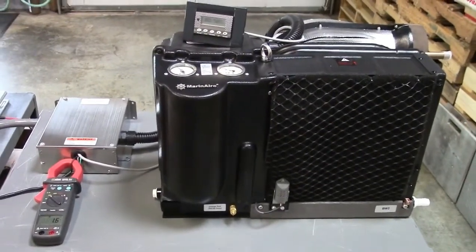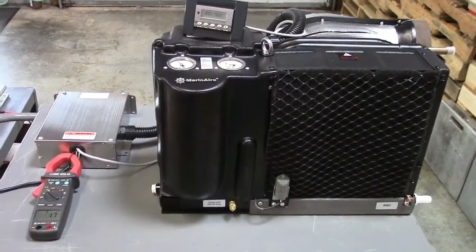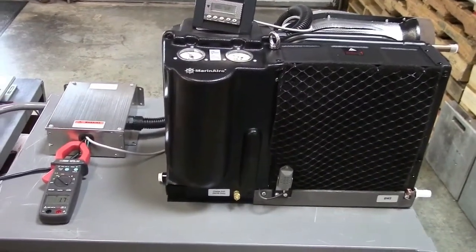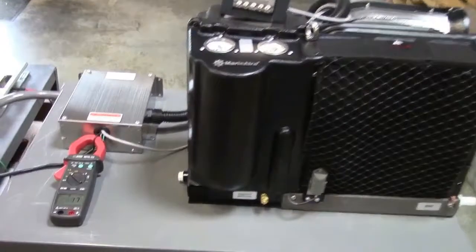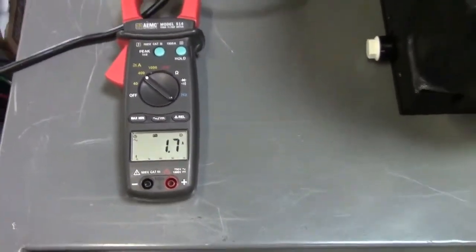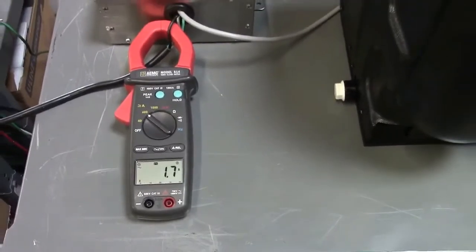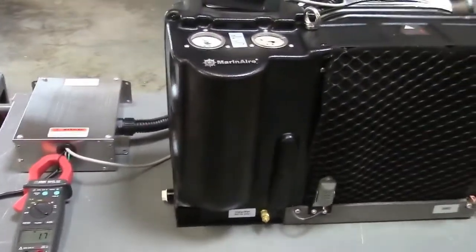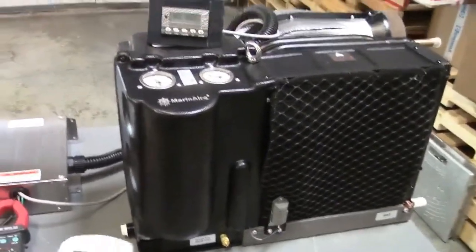We're going to start up our Mariner 16,000 BTU unit and see what the peak current is when the compressor starts. We've got a peak reading ammeter here which measures within one millisecond, so within a thousandth of a second. We have no pump connected, but the fan will be running.